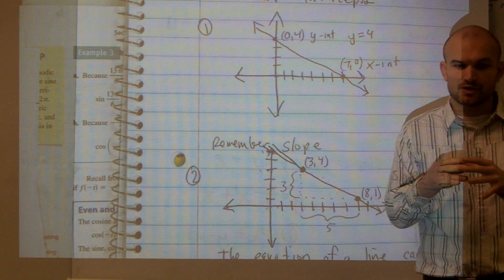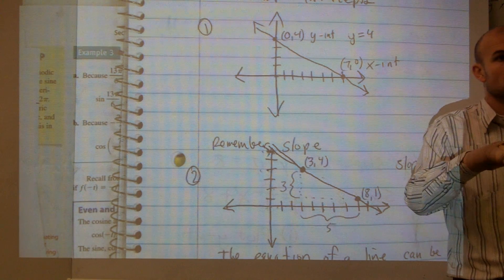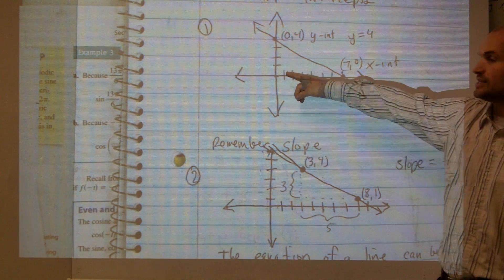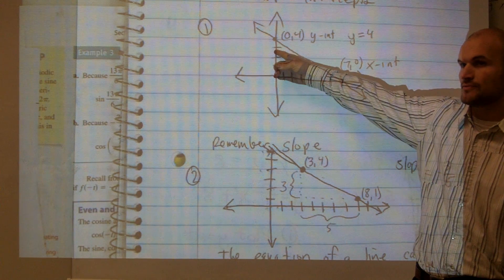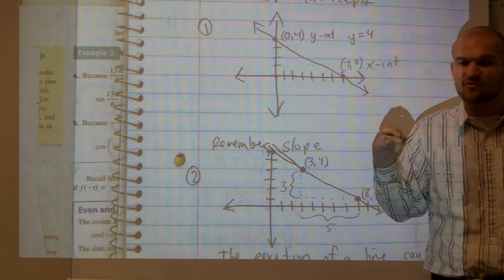The next thing we looked at was, for slope-intercept form, you have to know what the y-intercept is. For this equation, the y-intercept is up here, which is what value? Four. So we know the y-intercept is 4.